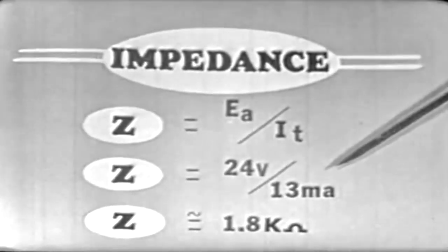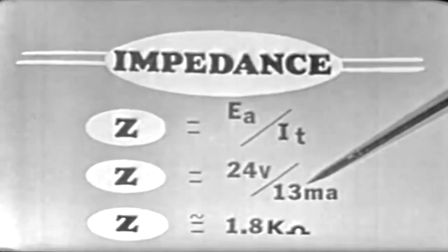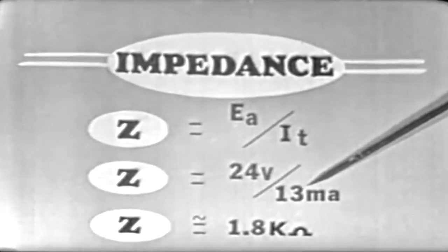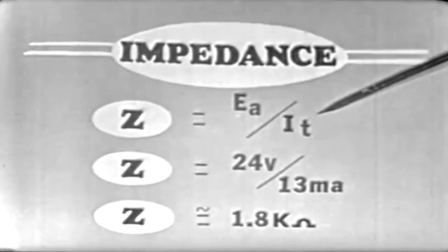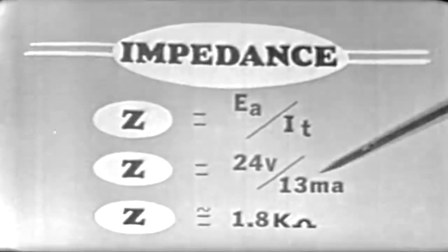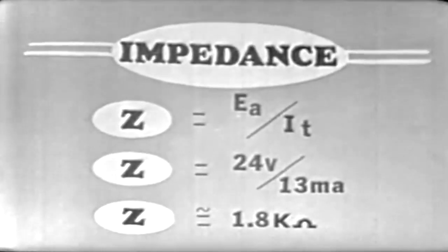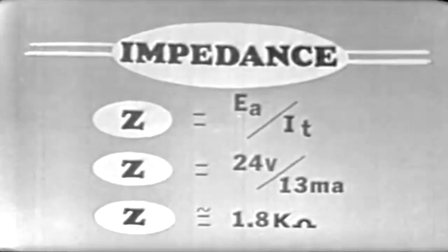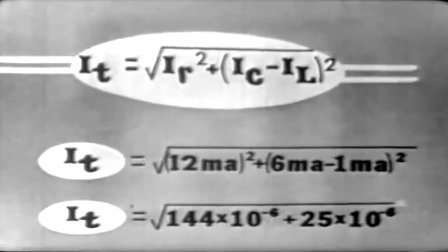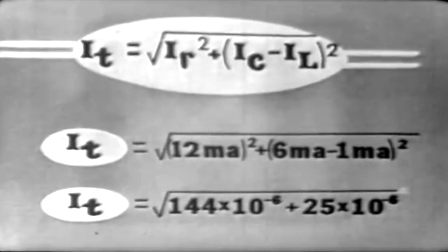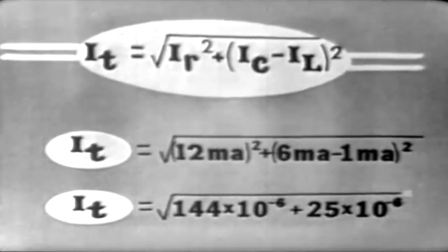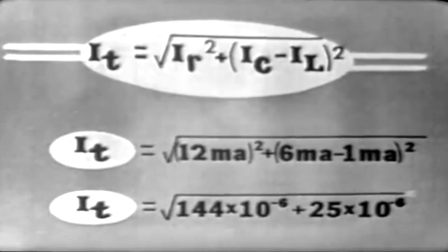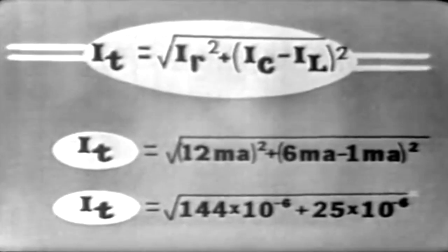Now, although I have chosen to solve for our total current, which is 13 milliamperes, by using a graphic solution, we can also use a much more accurate method, and that is Pythagorean theorem in determining our total current. Pythagorean theorem comes out this way, where IT is equal to the square root of IR squared, plus the quantity of IC minus IL squared.